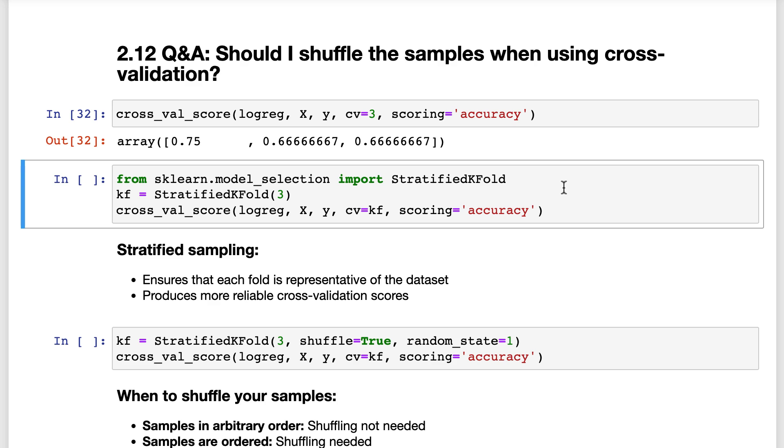First, you'll notice that we're importing a class called StratifiedKFold. It's known as a cross-validation splitter, which means that its role is to split datasets.